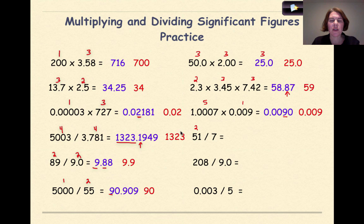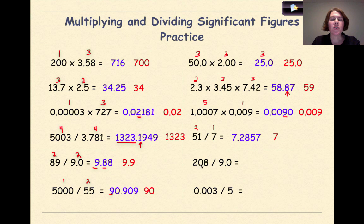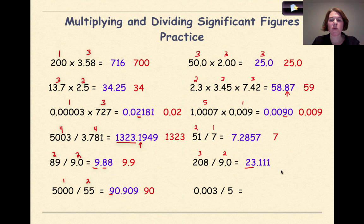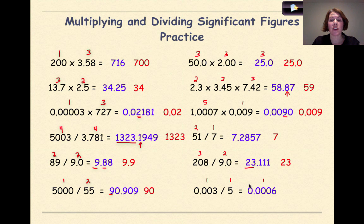Next: 51 divided by 7. 51 has two significant figures and 7 has one significant figure. Dividing gives 7.2857, but my final answer can only have one significant figure, so the answer is 7. Then 208 divided by 9.0. That's three and two significant figures. Dividing gives 23.111, but I can only have two significant figures — so my answer is 23. Finally, 0.003 times 5 gives 0.0006, which has only one significant figure — same result.